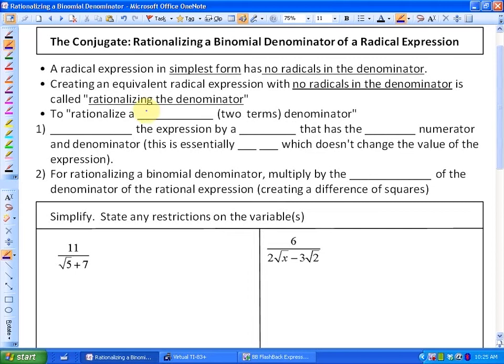And today what we're going to do is to rationalize a binomial. So you'll see in each of these examples we have two terms in our denominator. To rationalize a binomial denominator, what we're going to have to do is, much like we did with monomials, is multiply the expression by a fraction that has the same numerator and denominator. Because essentially this is the same as multiplying by 1, which doesn't change the value of the expression.